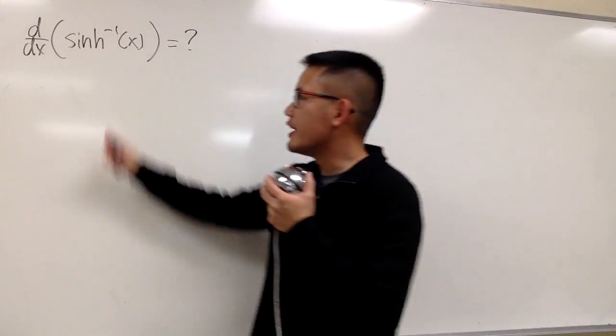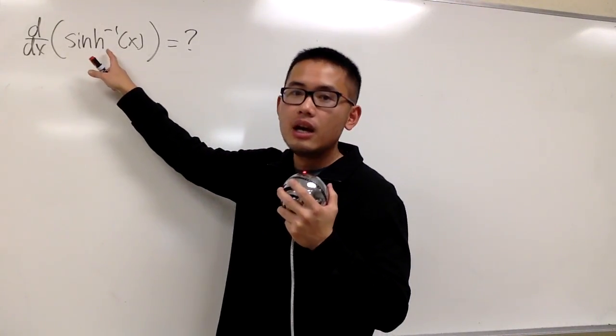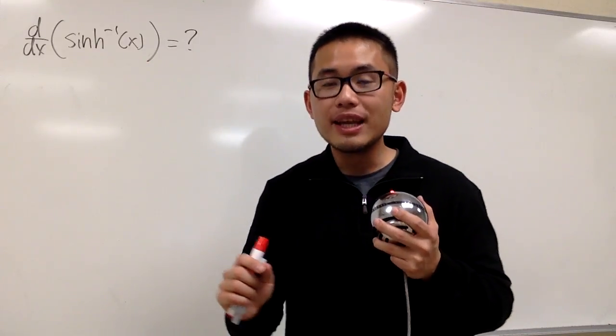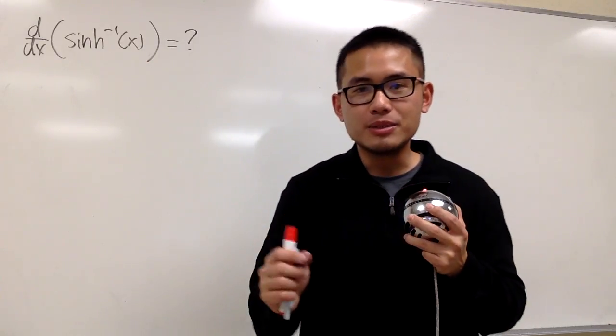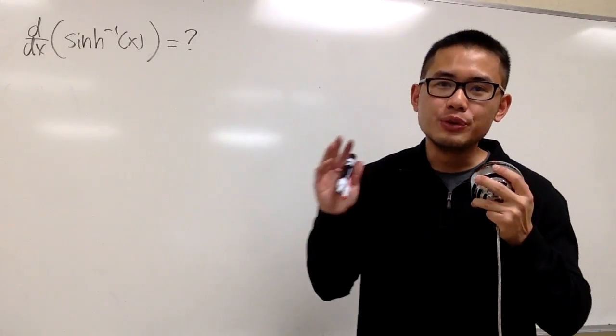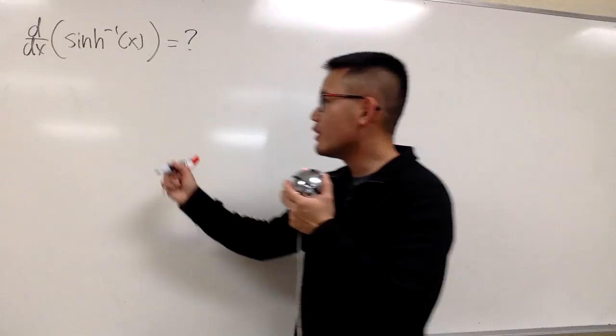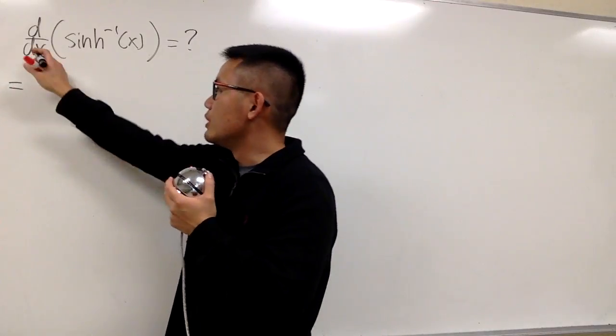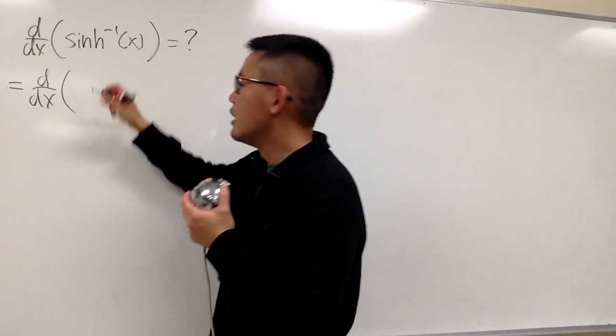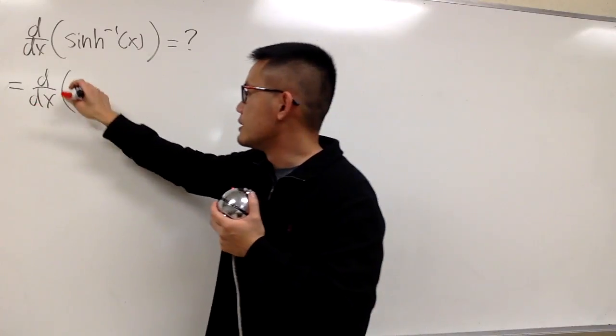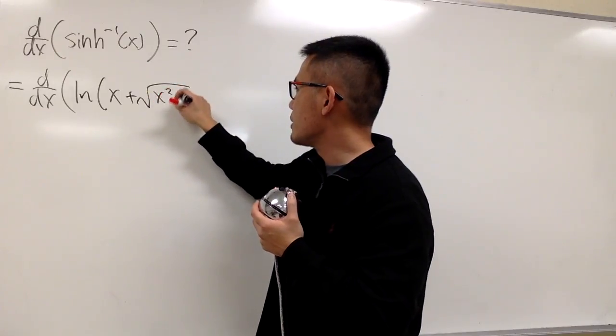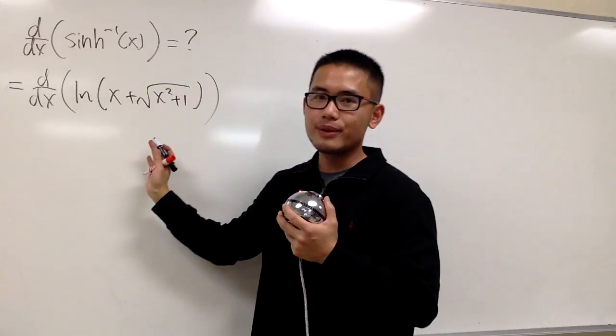I'm going to show you guys how to differentiate inverse sinh x. Unfortunately, we don't know this form too well, but we do know that we can write inverse sinh x in terms of ln of something. Be sure you check out my other video, I'll show you guys how to do that. In this video, I'll just show you guys the result. To differentiate this, it's the same as saying, let's go ahead and differentiate the equivalent form, which is ln of x plus square root of x squared plus 1.